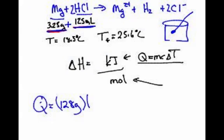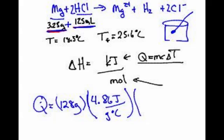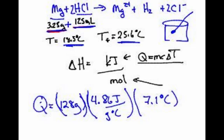Now C is given to us. It's 4.86 joules over grams degrees Celsius. It's a little higher. Why? We're taking into account probably the cup that it's in and also the fact that it's not pure water. It's hydrochloric acid and has some magnesium in it. And our change in temperature went from 18 to 25.6. Seven point one degrees Celsius. So we just simply multiply 128 times 4.86 times 7.1. And that gives you 4417 joules.